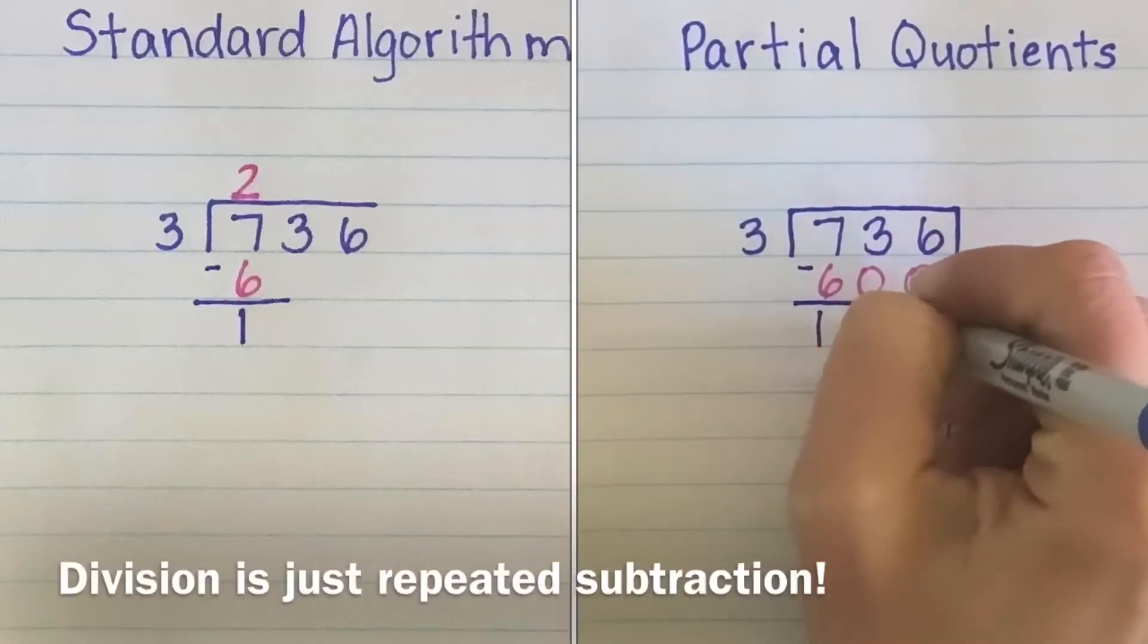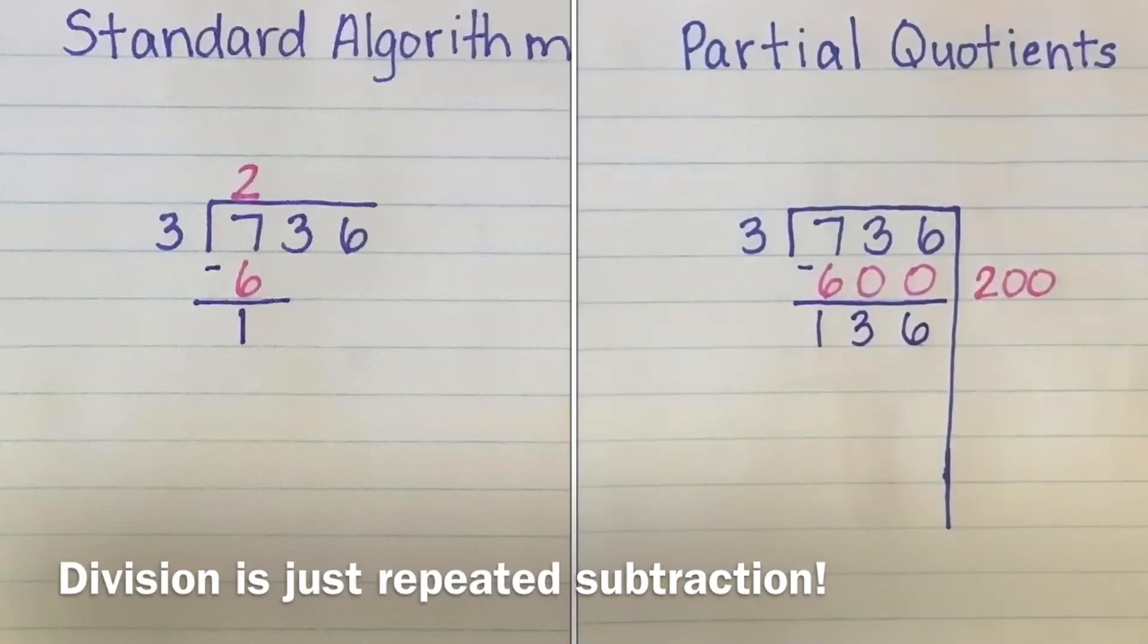Both methods show that division is the process of repeated subtraction. On the standard algorithm side, you're using basic facts. But on the partial quotients side, you're using multiples of 10.